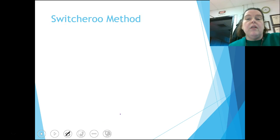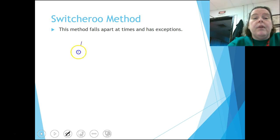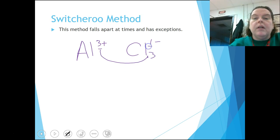Next one and last one is the switcheroo method. And the switcheroo method, you have to be really careful because there are exceptions. And if you're not mathematically savvy enough to determine where the exceptions happen, you're going to have a real problem. So if I look at aluminum three plus and let's say Cl one minus, switcheroo says I'm going to take the three from the aluminum and make it the number of Cls. And I'm going to take the one from the Cl and make it the number of aluminum.